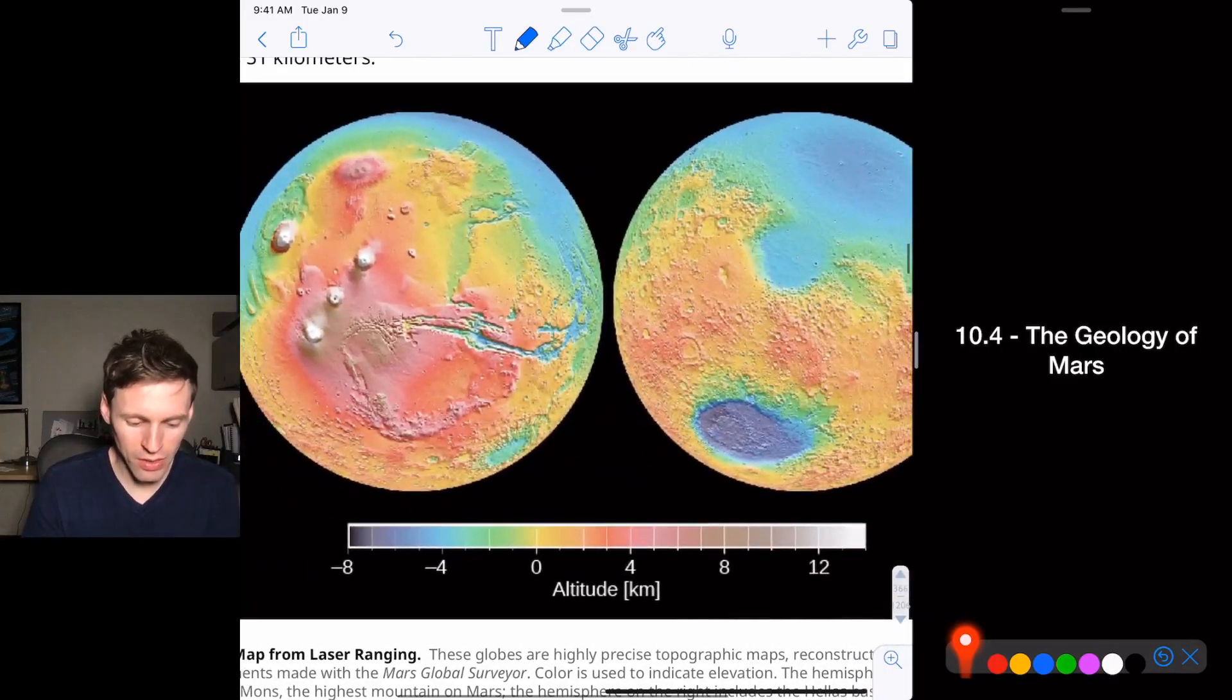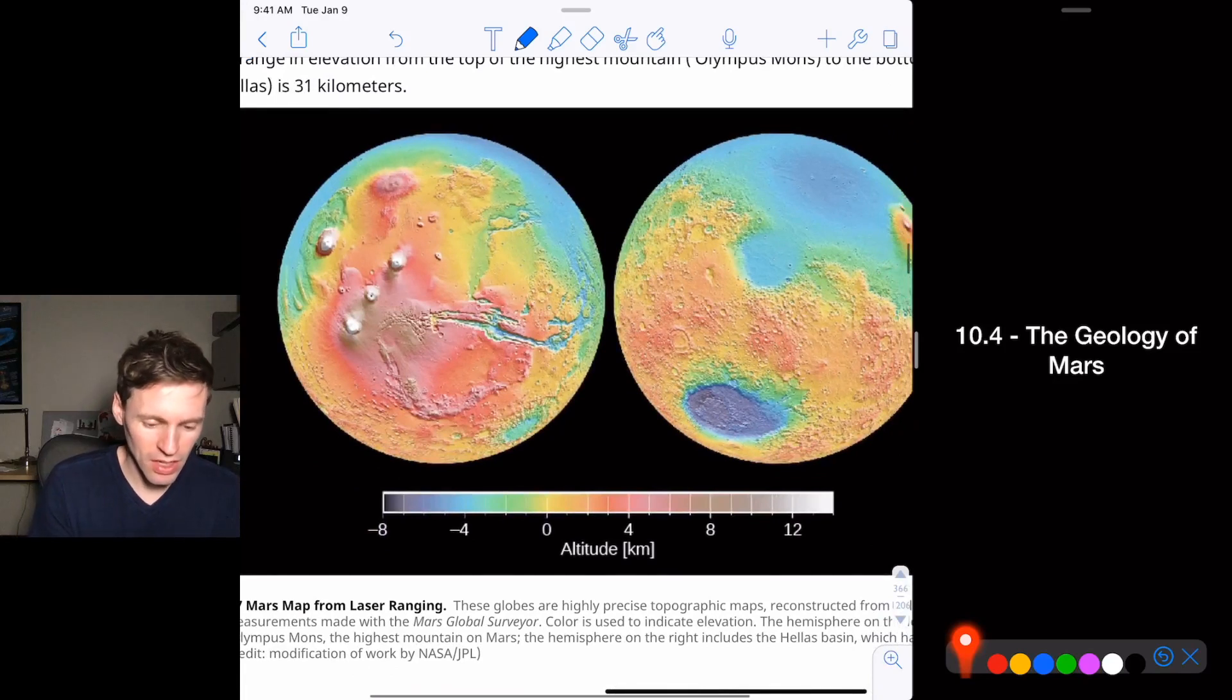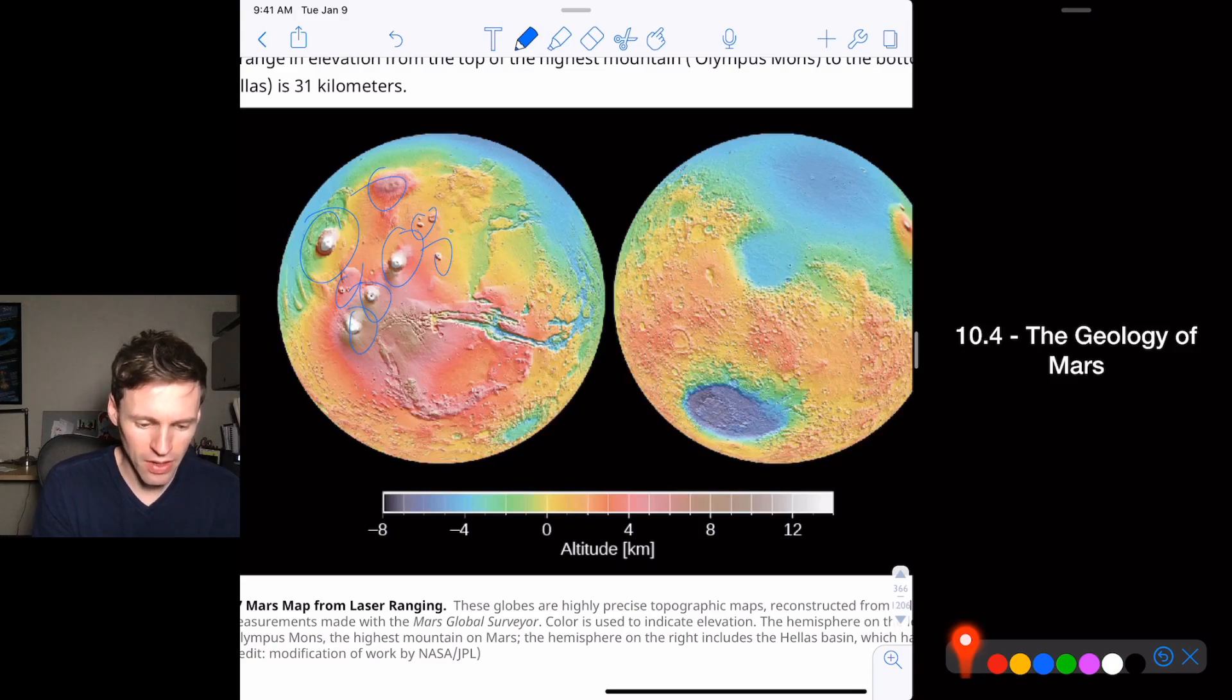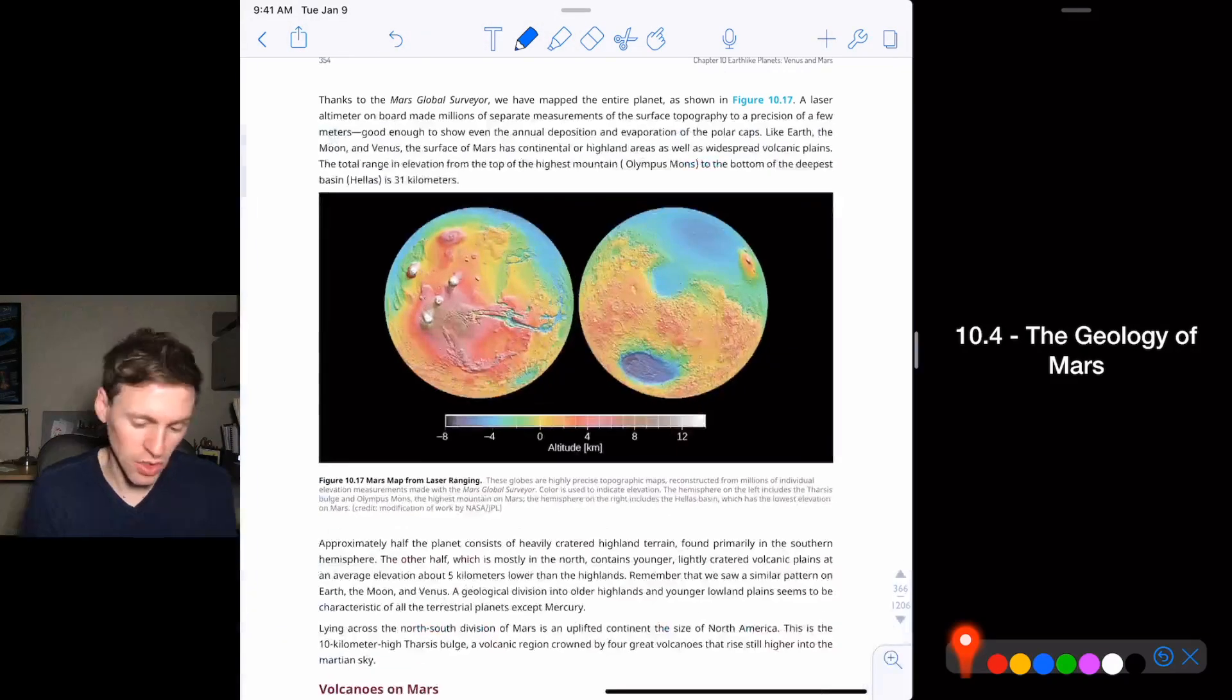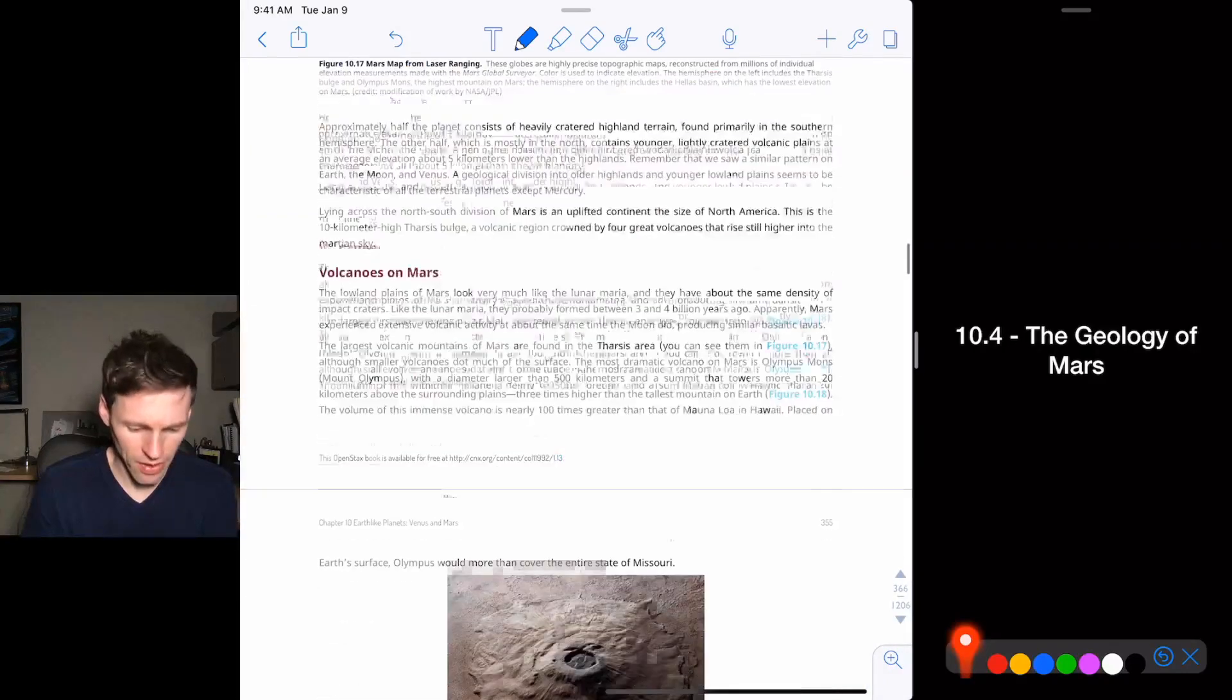This is again, radar image of Mars. And you can see on the left-hand image, a ton of large, well, maybe four, four very large volcanoes. And then some others pretty large volcanoes there. Those volcanoes are some of the biggest, actually the biggest in the solar system.